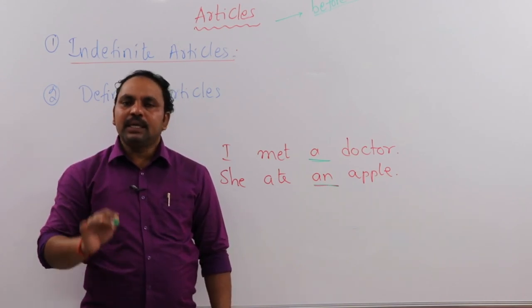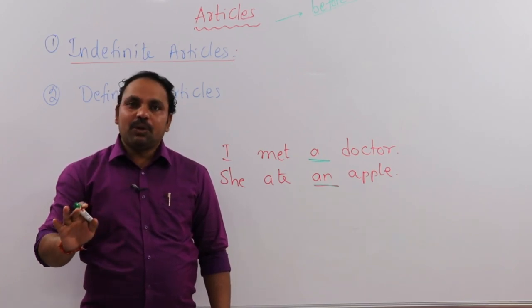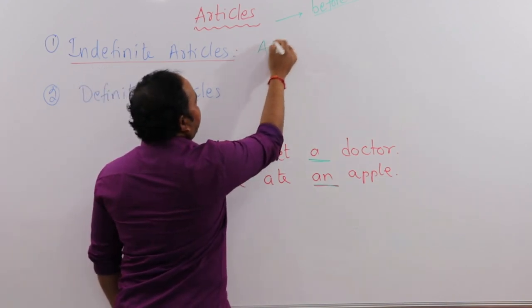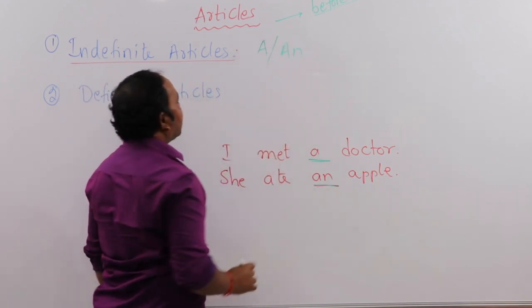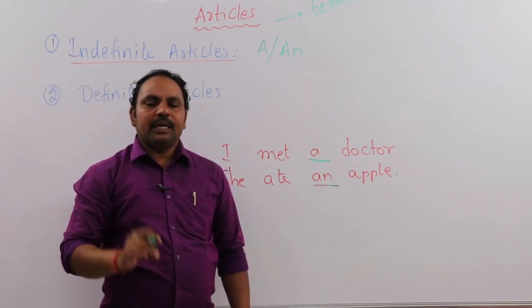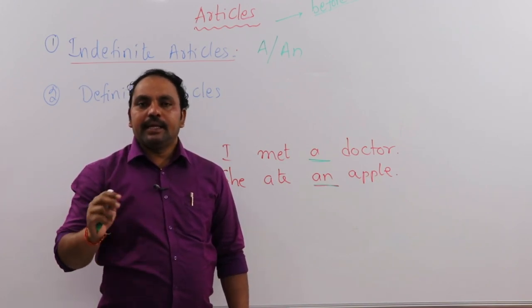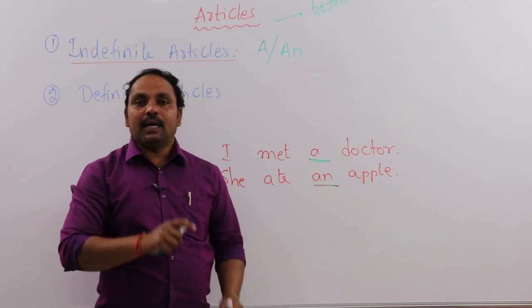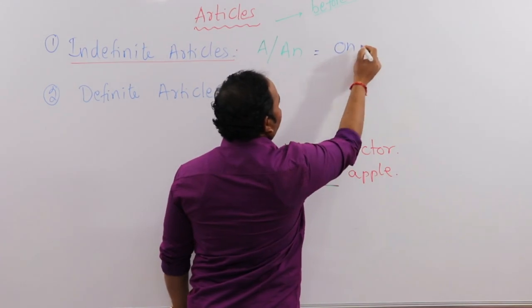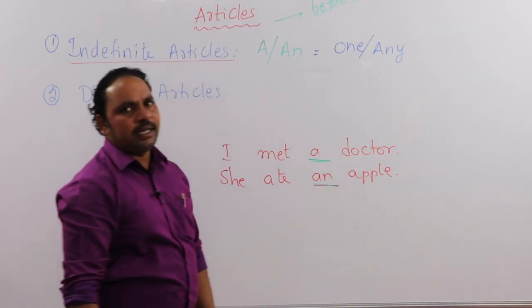The first type of article is indefinite article. Indefinite article - 'a' or 'an' - has a meaning. 'A' or 'an' is equal to 'one' or 'any.' It means one or any - these meanings are conveyed by the indefinite articles 'a' and 'an.'